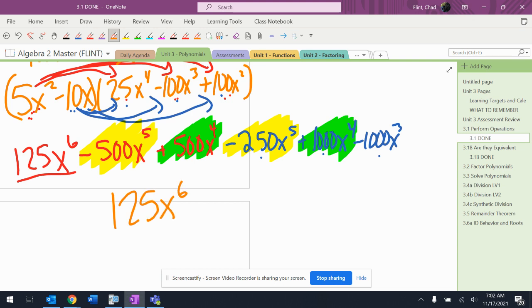125x to the sixth. Negative 500 minus 250 more is negative 750x to the fifth. Positive 500 and 1,000 is positive 1,500x to the fourth. And then negative 1,000x to the third.